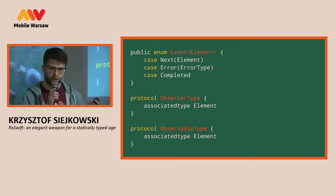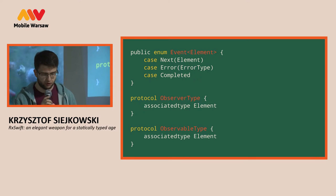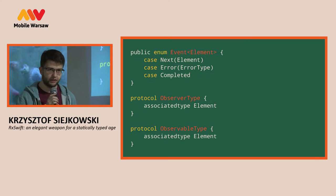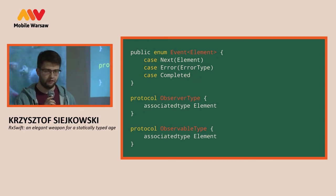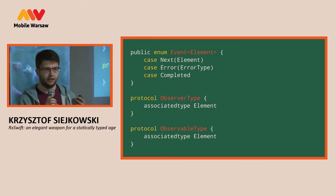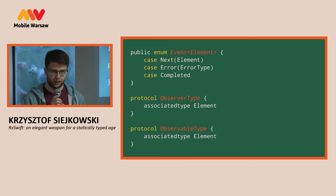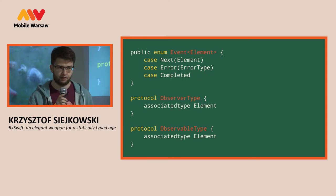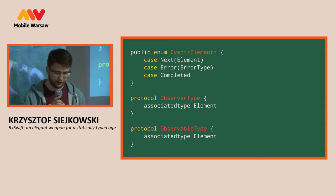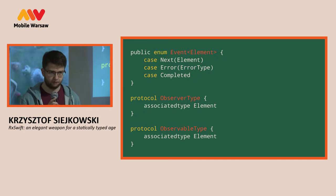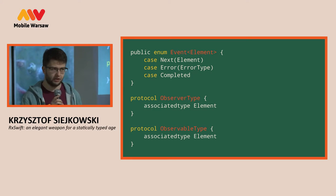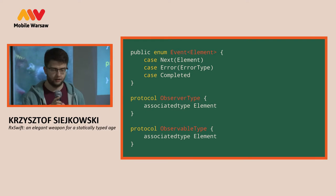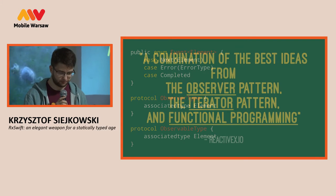The observer and the observable are in their basics modeled as protocols that are also generic, and they do have to match in terms of the data that they expect. So if you have an observable that emits events with strings, you just cannot subscribe with an observer that expects ints, for example.